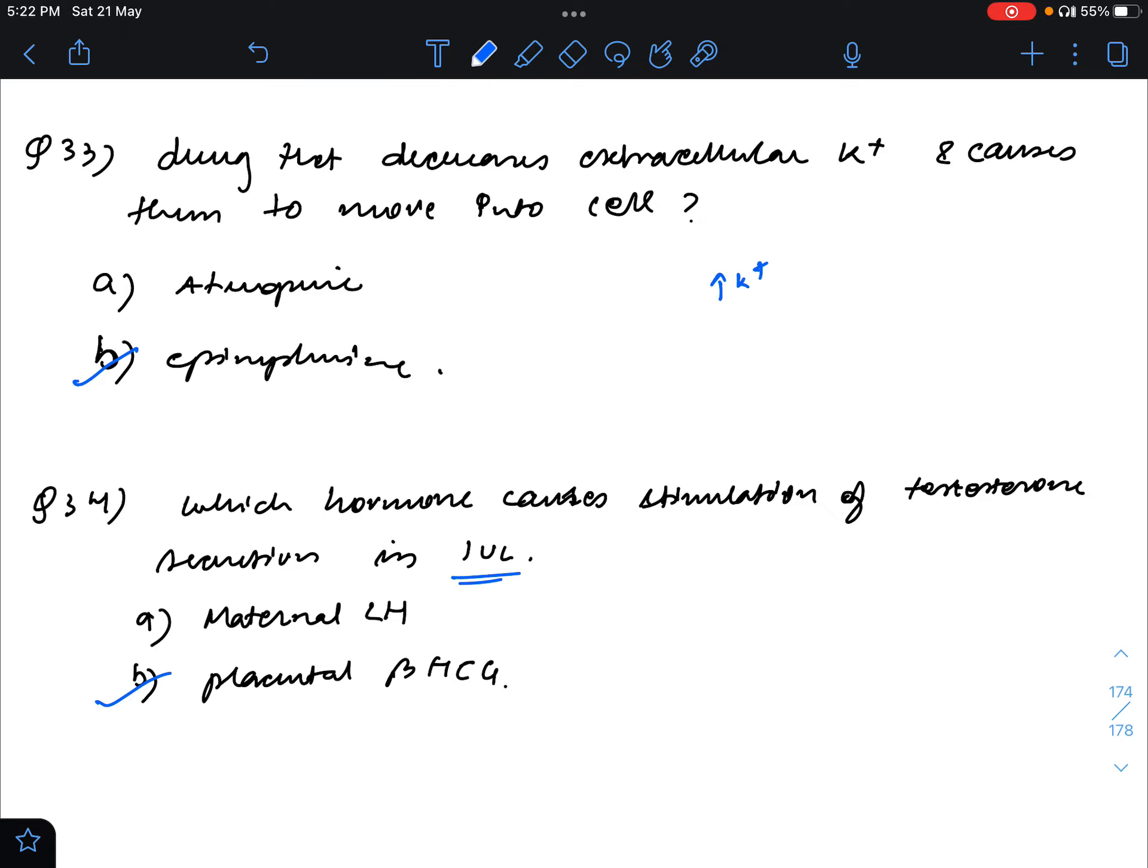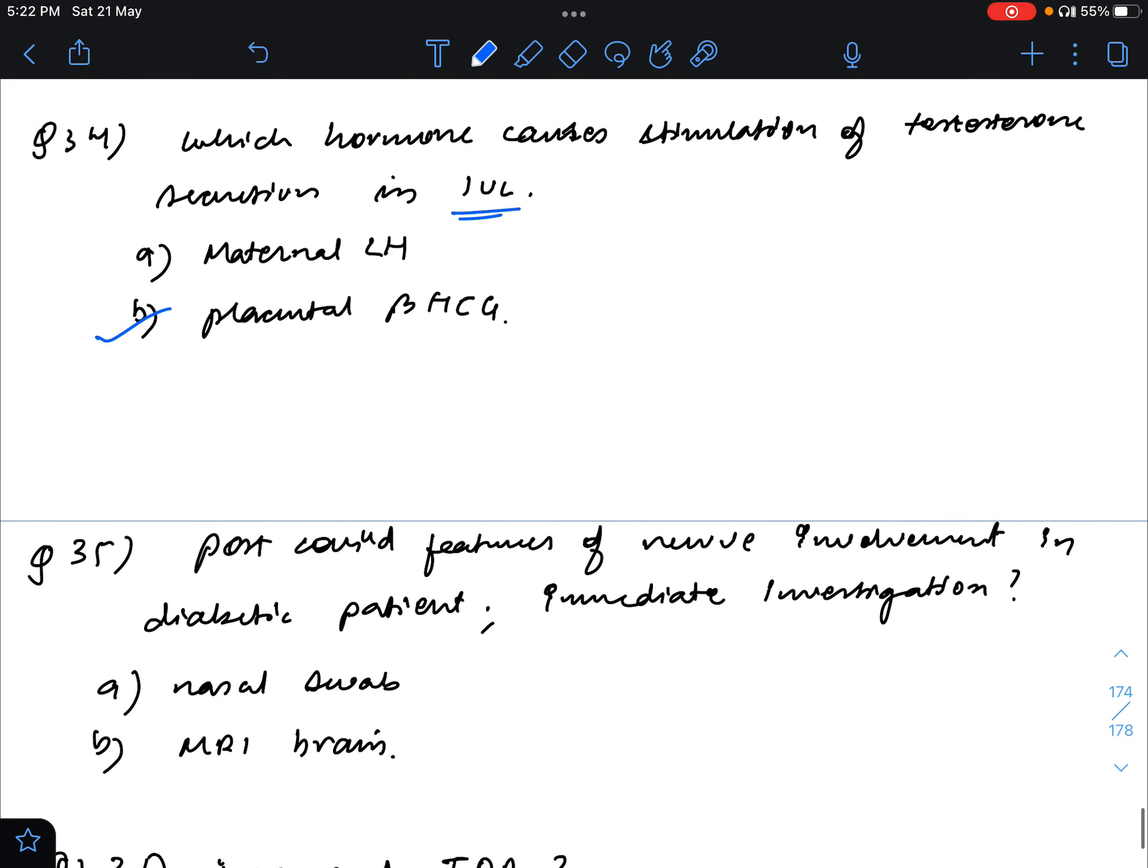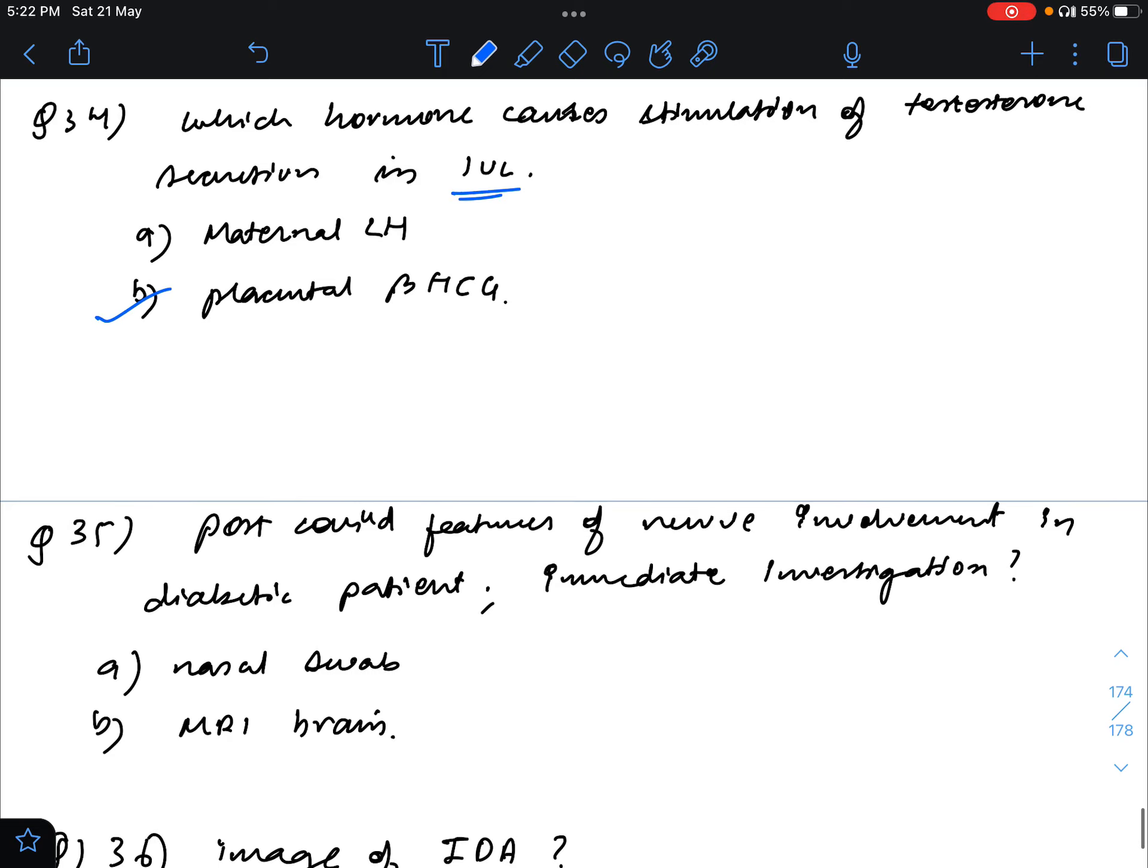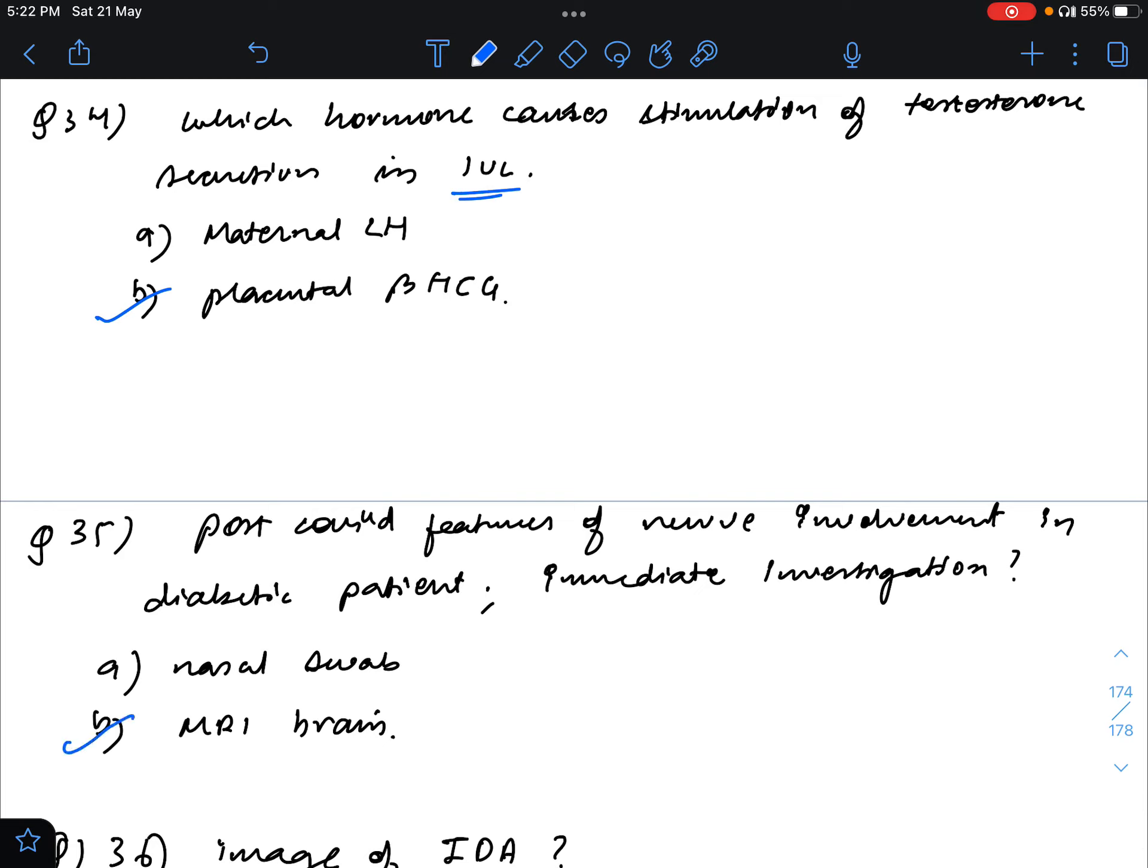Post COVID, there was a question regarding that after COVID a diabetic patient started developing features of some nerve involvement. What is the immediate investigation for this? I don't exactly remember the question, but it was something similar to this and I think the answer will be MRI brain to see the extent of the involvement. Probably this is the answer but I may be wrong, please tell in the comments.